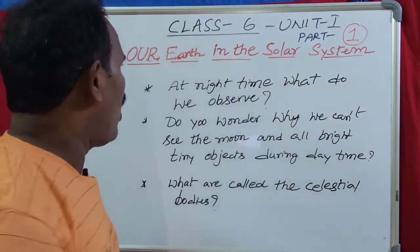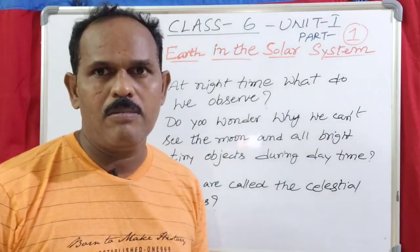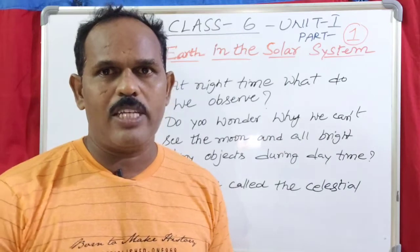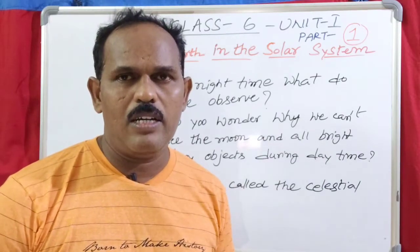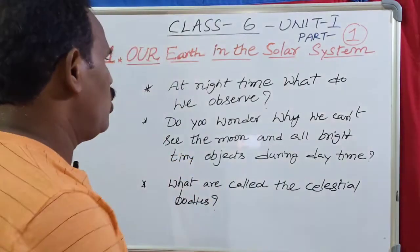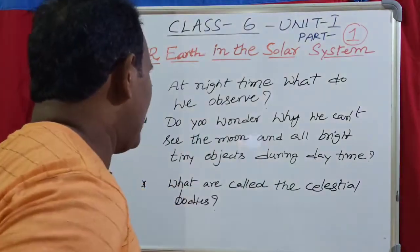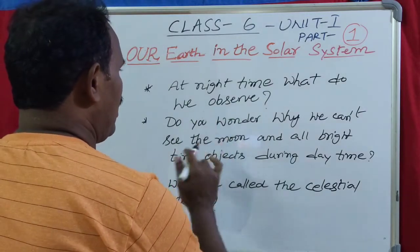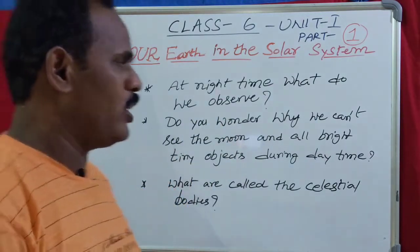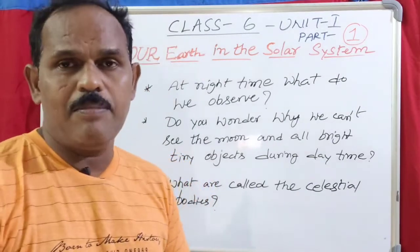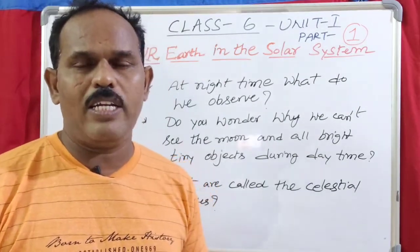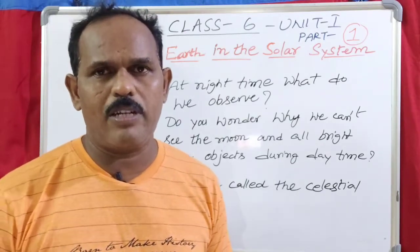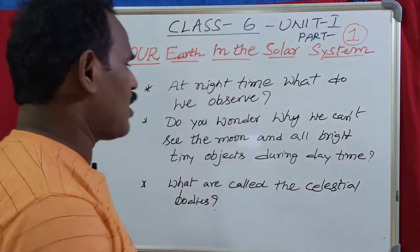At night time, what do we observe? Do you wonder why we cannot see the moon and all bright tiny objects during the daytime? We observe the sun in the daytime. These objects are called celestial bodies.